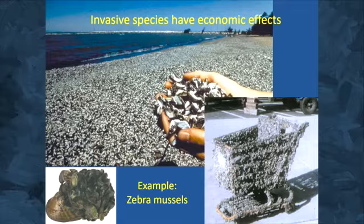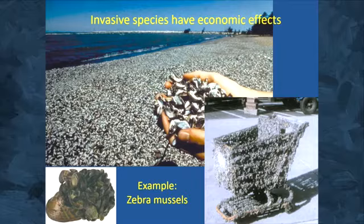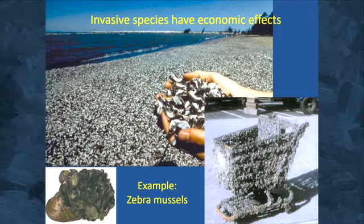Invasive species can also have really big economic impacts. One of the best case studies is the zebra mussel, introduced from Europe into North America. It was introduced accidentally by ships that picked up ballast water in Europe, traveled across the Atlantic, and dumped that ballast water here. These zebra mussels very quickly spread into a lot of fresh water systems in North America — and they are apparently in Utah as well.